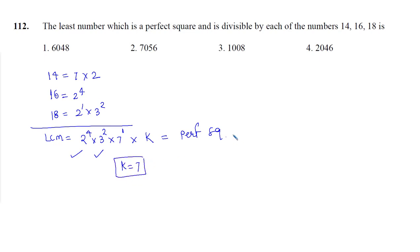So the value of k is supposed to be 7. So this number becomes 2^4 × 3^2 × 7^2. So let's multiply this. This is going to be 16 into 9 is 144 into 49. So what you can do is 144 into 50 minus 1, 144 into 5 is 720, that is 7200 minus 144. So the answer is going to be 7056, that is option number 2.